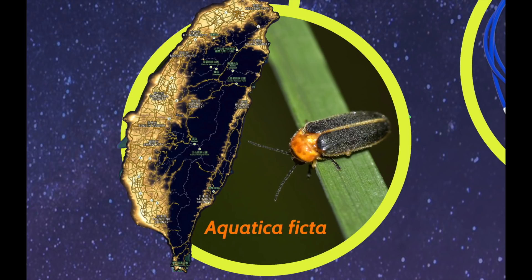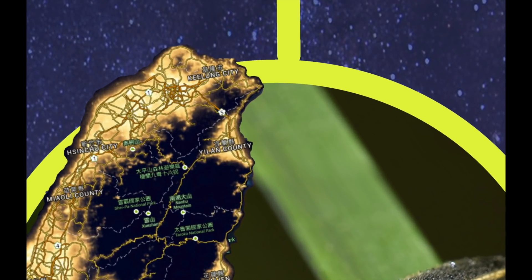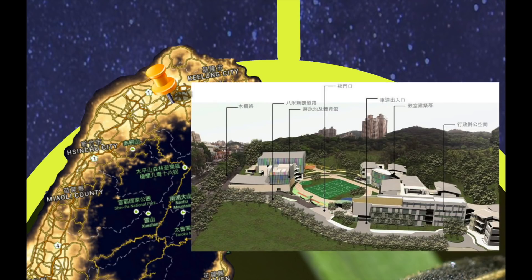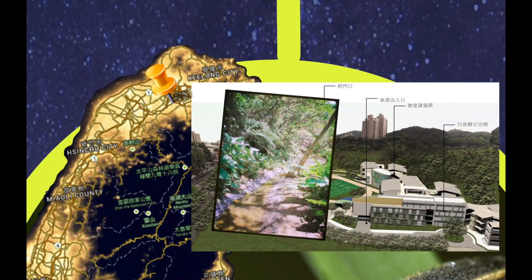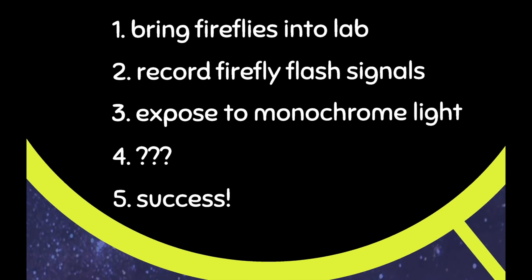And the population I worked with was actually found right in the middle of Taipei City, in this place called Yongjian Elementary, or the grounds of the future Yongjian Elementary, because it was under construction when I was there. In the back, they have this beautiful brook, which was bustling with Aquatica ficta fireflies. So a couple times during the season, I went and collected about six males from that brook and took them back to the lab. So that's step one complete.